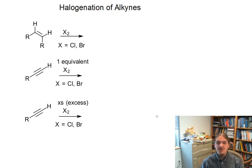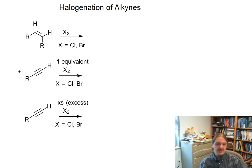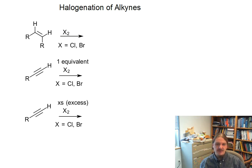In this video, we're going to talk about the halogenation of alkynes. Just like alkenes, alkynes react with halogens. We're only talking about chlorine and bromine here — the reaction with iodine is not very productive.